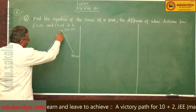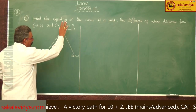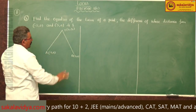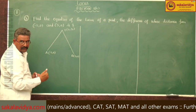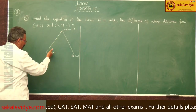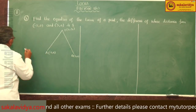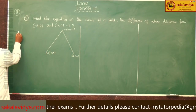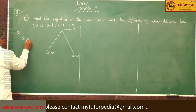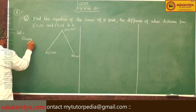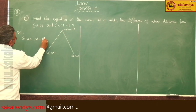Mathematically, PA minus PB is equal to 8, given. That means the locus of point P moves such that PA minus PB equals 8. So here, given PA minus PB is equal to 8.